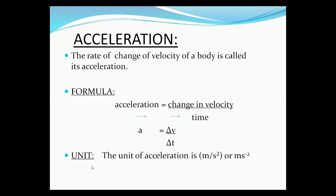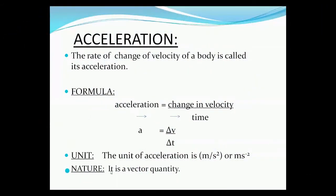The SI unit of acceleration is meters per second squared, written as m/s² or m·s⁻². Regarding the nature of acceleration, it is a vector quantity, meaning it requires a direction. Whenever a direction is not given, it cannot be treated as a vector quantity. The direction of acceleration is shown by the change in velocity.